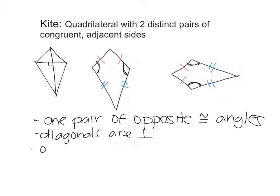And one diagonal bisects another. They do not bisect each other. So in this original picture here of this kite with these two diagonals, this one you can tell is not bisected, but this one is. So I know that this is congruent to this.